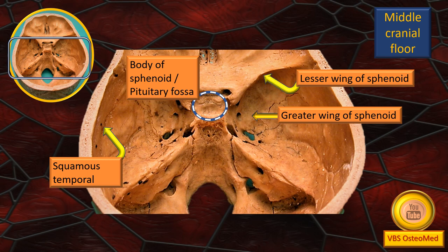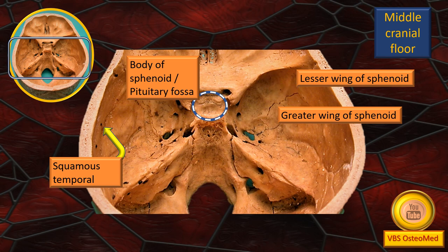In particular in this discussion, the upper surface of the body of the sphenoid, which is the pituitary fossa or hypophysial fossa. That plate of bone separates the pituitary fossa from the sphenoidal air sinus below it.